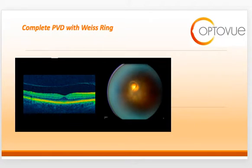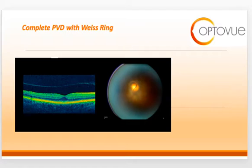Here you can see a complete PVD, or stage four. The PVD is completely free and floating in the vitreous space. On the right-hand side of the picture, you can see what we call a Weiss ring. When you see a Weiss ring, this is an indication that the vitreous has completely detached from the retina.